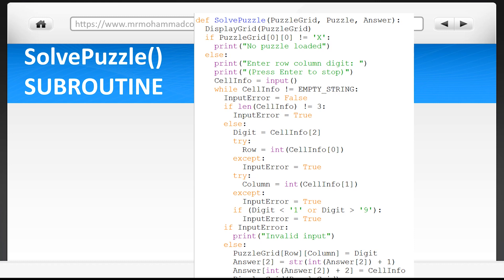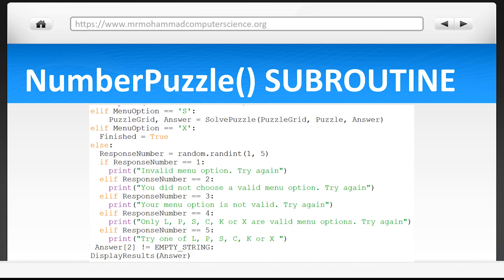Okay with SolvePuzzle explained, let's head back to NumberPuzzle. Up next we've got the option x entered by the user. Well this just does one thing and that's changing finished's boolean value into false which ends the program.